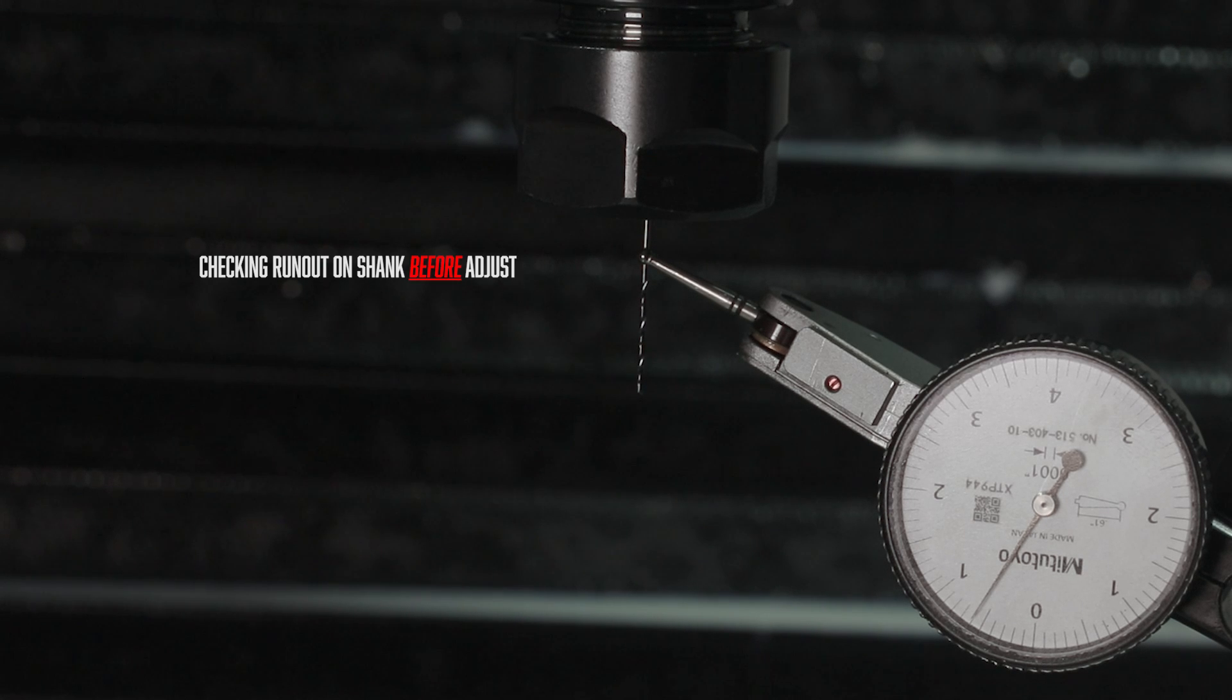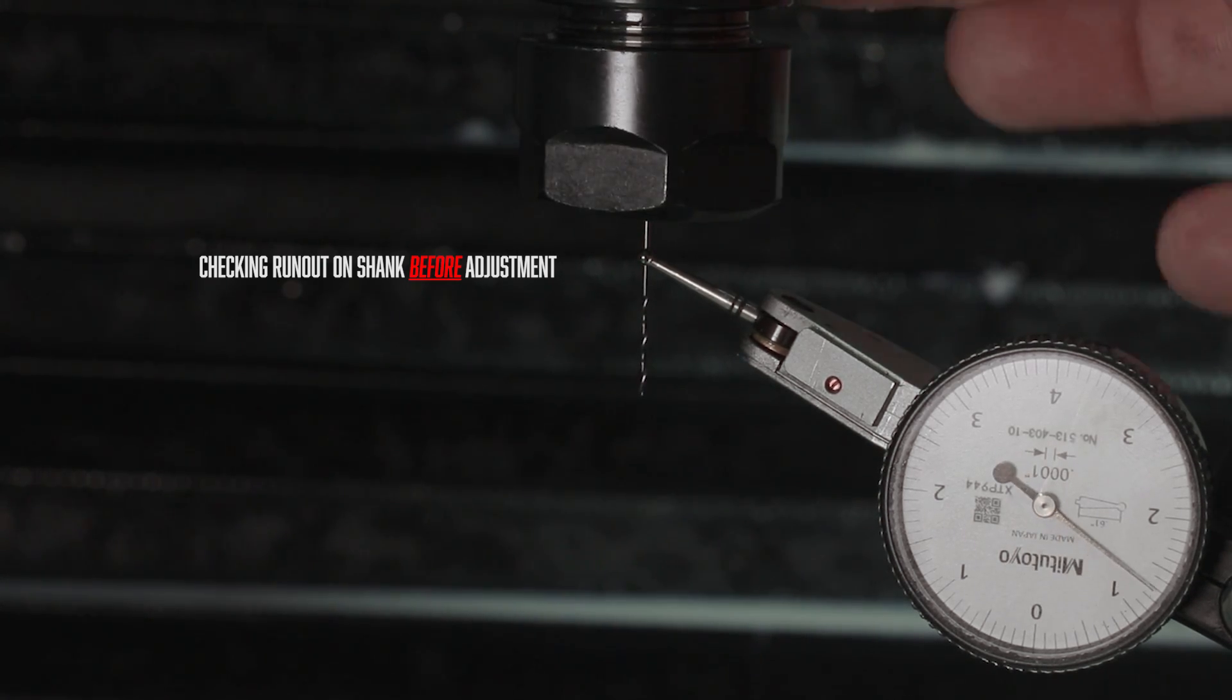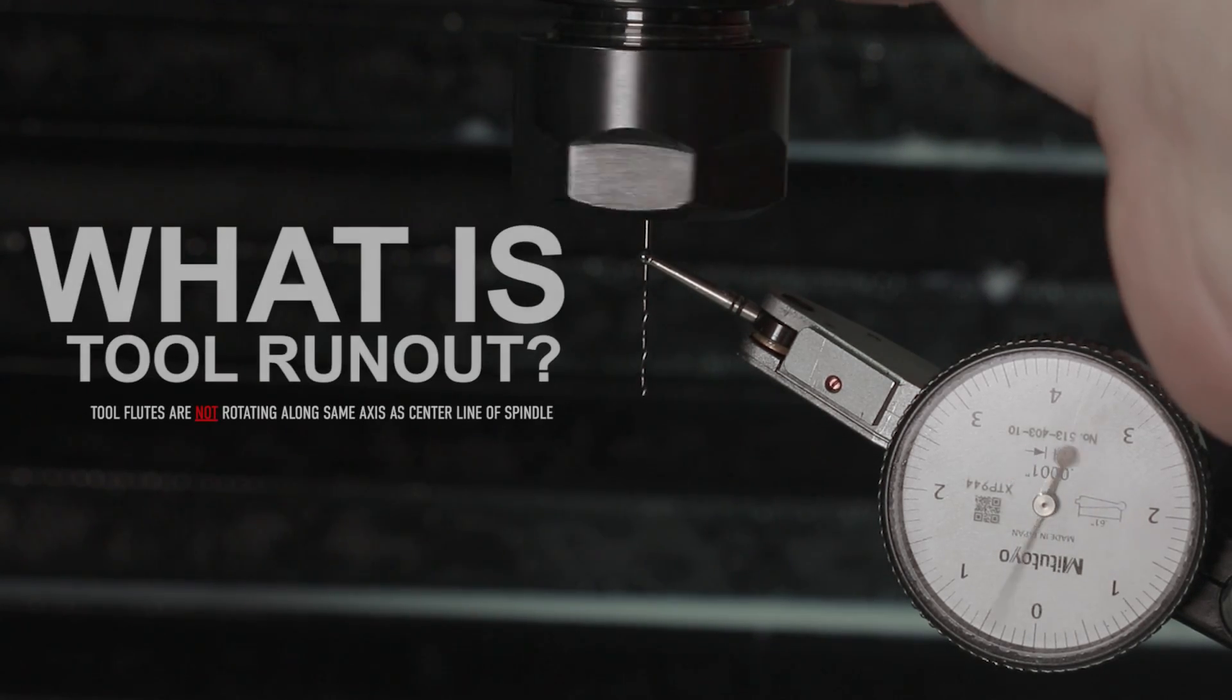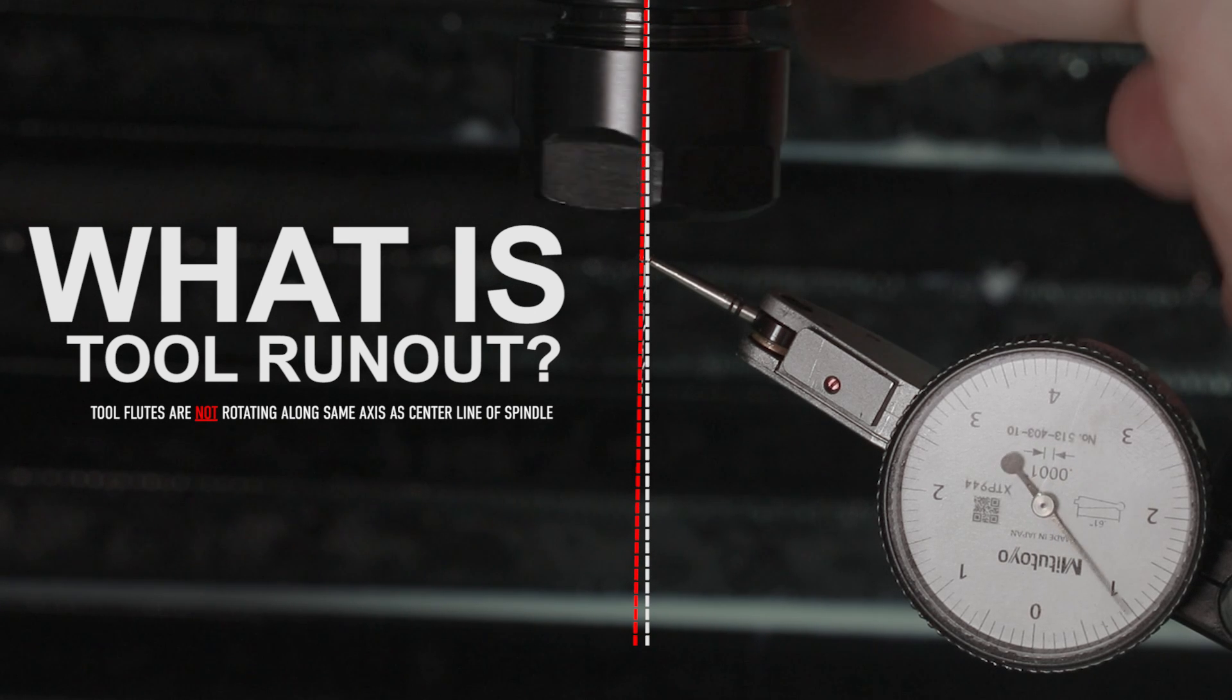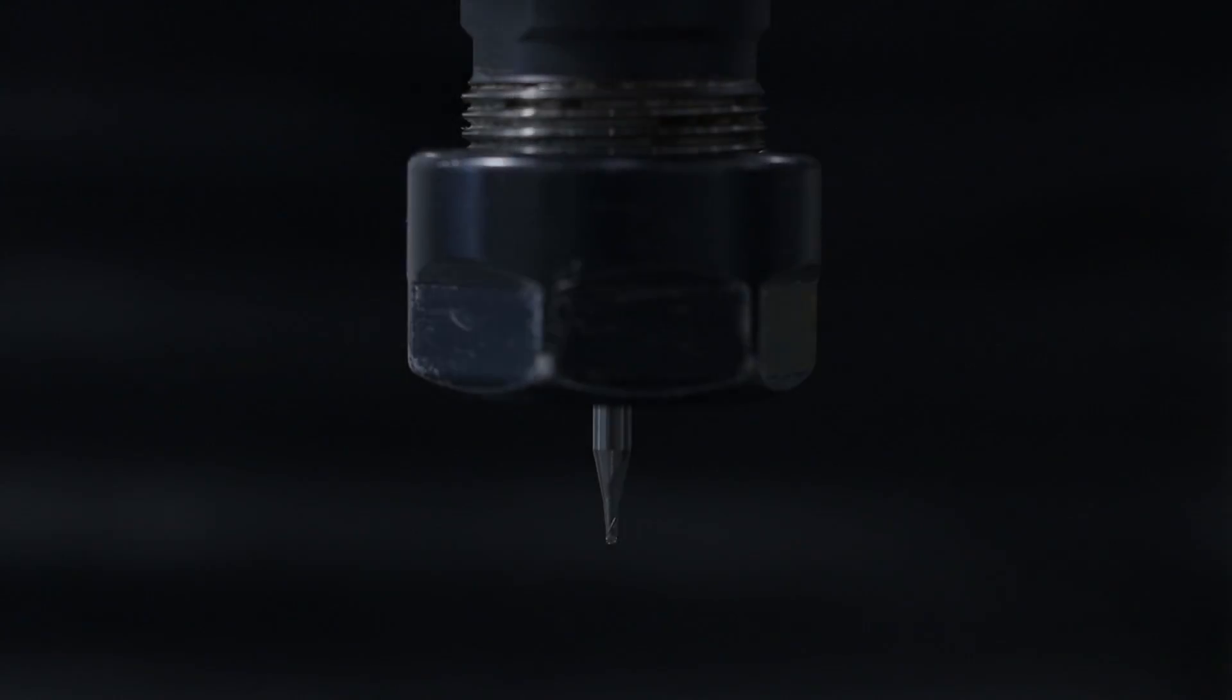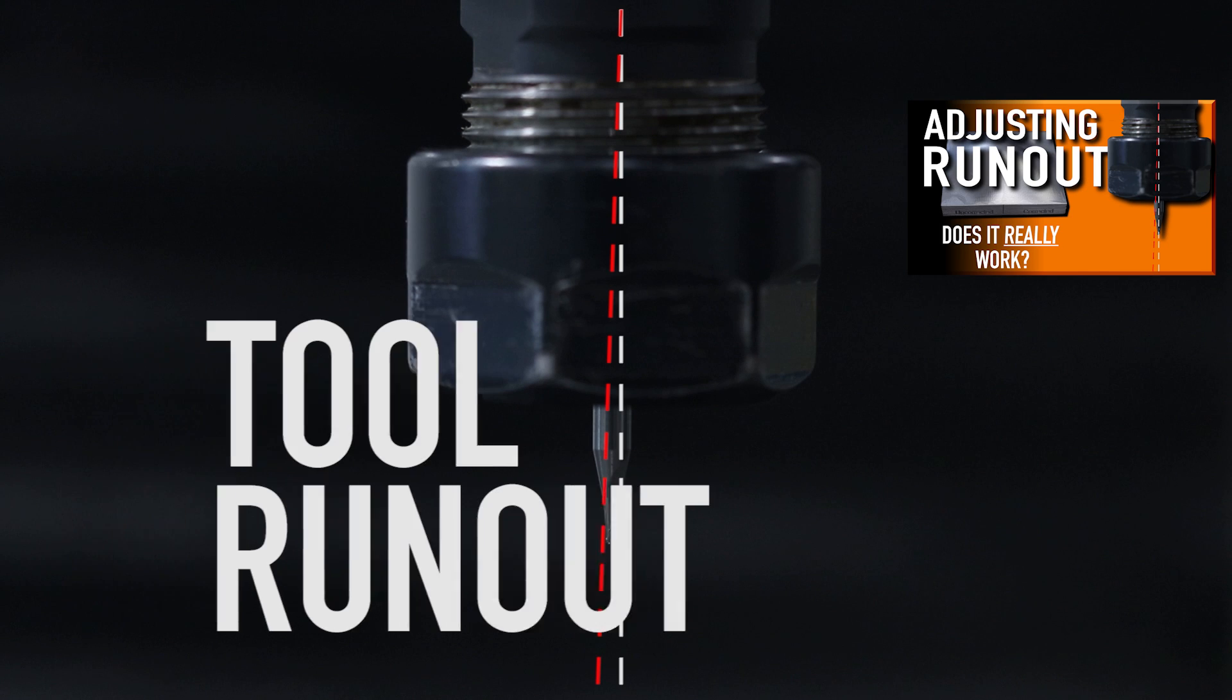Before we get to the machining I'd like to talk about one of the most important things you need to consider when running small tools like this and that thing is runout. Runout is basically how much your tool wobbles as it moves around the circle. Card here for the NYC CNC video on how to measure, check and adjust your runout.